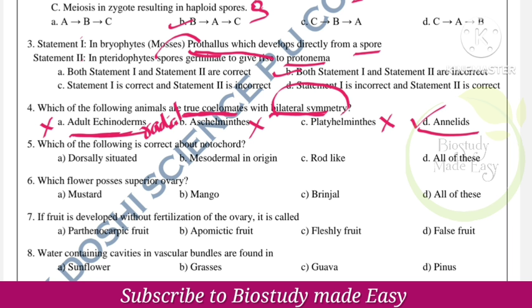Which of the following is correct about notochord? Notochord is rod-like, it is dorsally situated, and it is of mesodermal origin. So the right answer is all of these.